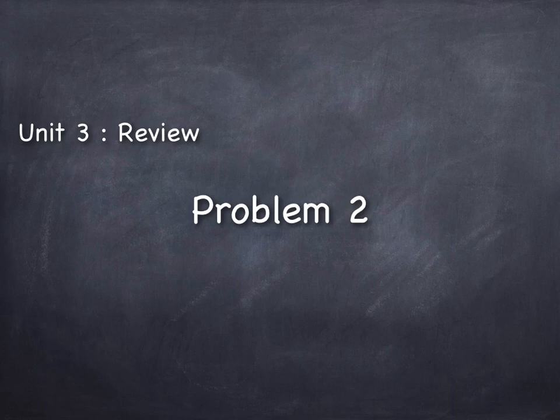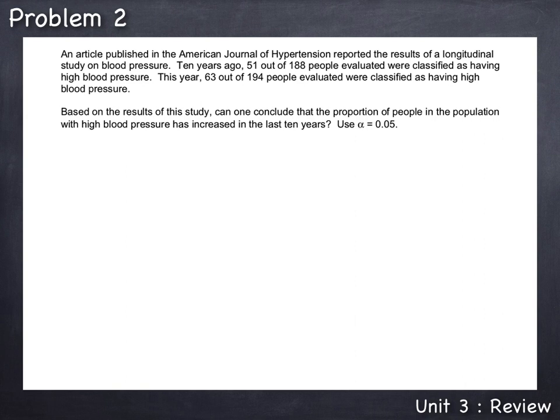Unit 3 Review, Problem 2. An article published in the American Journal of Hypertension reported the results of a longitudinal study on blood pressure. Ten years ago, 51 out of 188 people evaluated were classified as having high blood pressure. This year, 63 out of 194 people evaluated were classified as having high blood pressure. Based on the results of this study, can one conclude that the proportion of people in the population with high blood pressure has increased in the last 10 years? Use alpha equals 0.05.